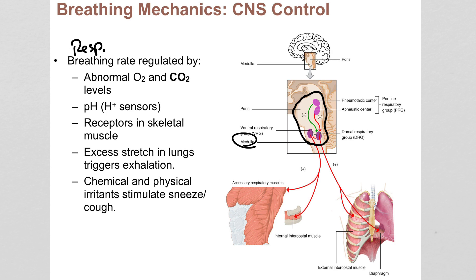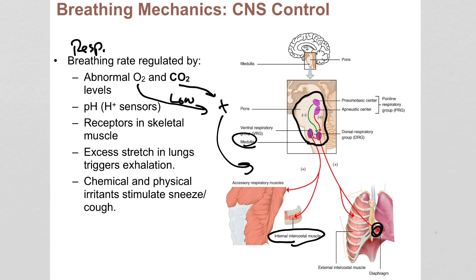Those respiratory centers connect to the intercostal muscles between the ribs and to the diaphragm. The deeper and faster you breathe, the more stimulation comes from those centers. The most important factors your brain monitors when deciding how fast to breathe are blood gas levels — oxygen and CO2. Low oxygen, high CO2, or low pH (meaning acidic) all stimulate faster breathing.